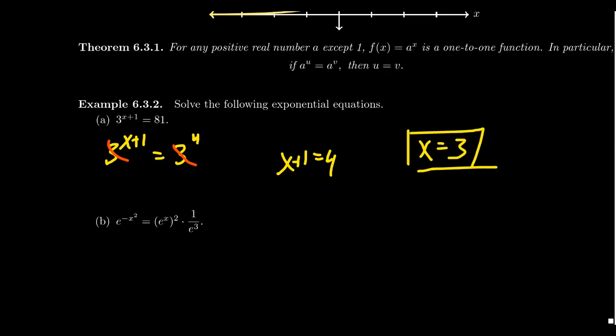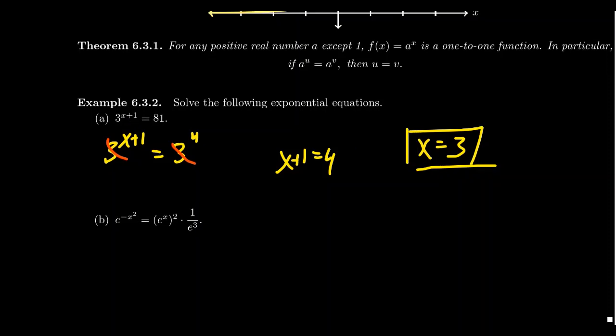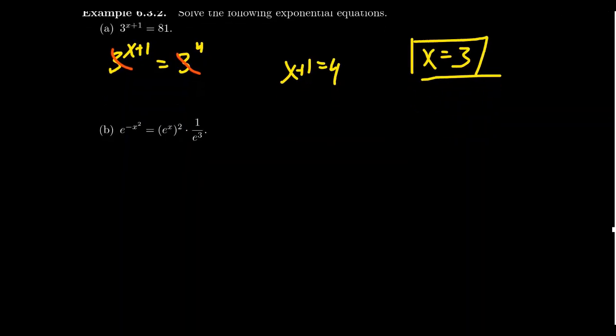And then in retrospect, it's easy to check, right? If you plug in 3, 3+1 is 4, 3^4 is 81. Great! We're able to solve that equation. Let's look at one that's a little bit more involved, but still.